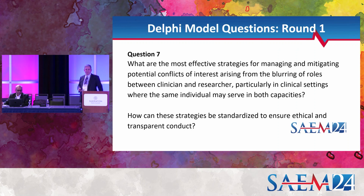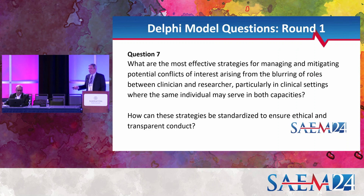Question seven goes into blurring the roles: we talked about blurring between clinician and researcher, and also between researcher and community member. In many resource-scarce environments, the clinician is the researcher and the researcher is the clinician — it's the same person. So how could strategies be standardized to ensure that conduct is ethical and transparent? Any additional thoughts or reactions to this question?